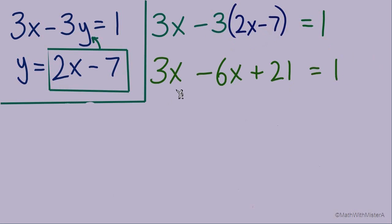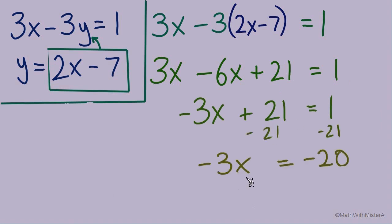Now we've got some like terms, 3x minus 6x equals negative 3x, bringing down plus 21 equals 1. Now we'll subtract 21 from both sides to get negative 3x equals negative 20.